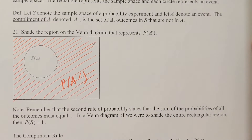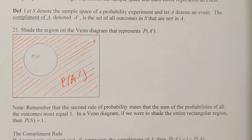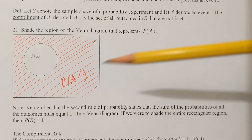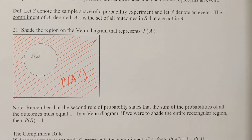As a note, remember the second rule of probability states that the sum of the probabilities of all the outcomes must equal 1. In a Venn diagram, if we were to shade the entire rectangular region, then the probability of the sample space is equal to 1. That's rule 2 for probability. Remember, rule 1 was that probability always has to be between 0 and 1.